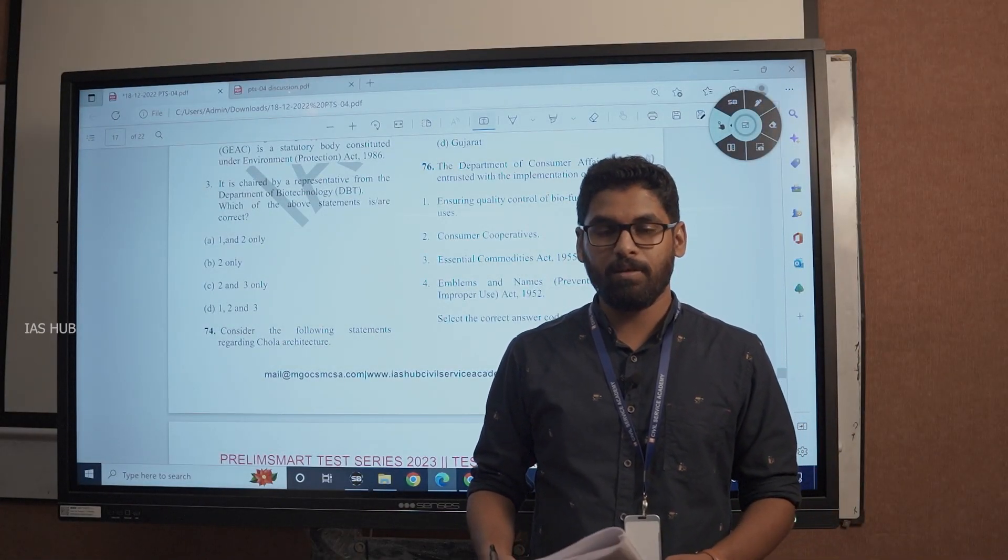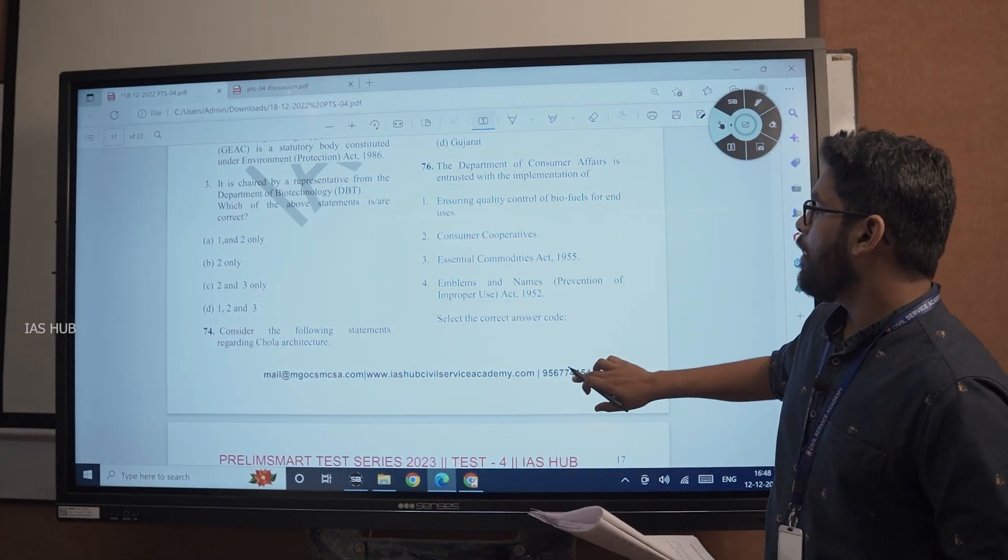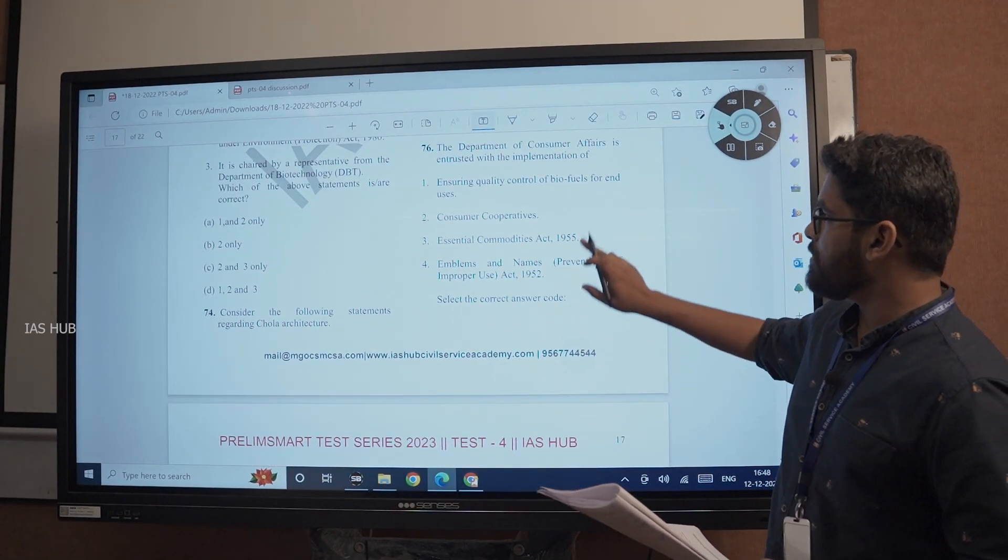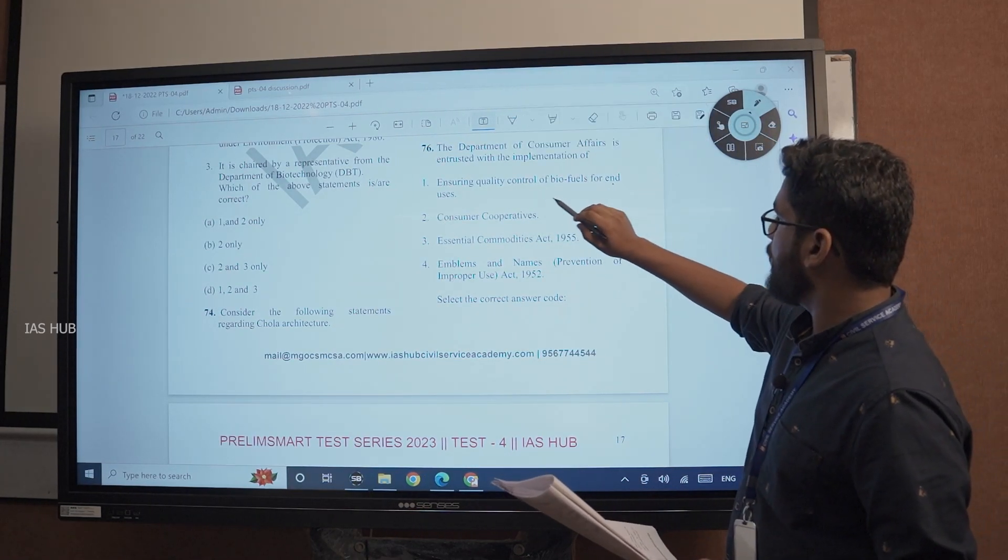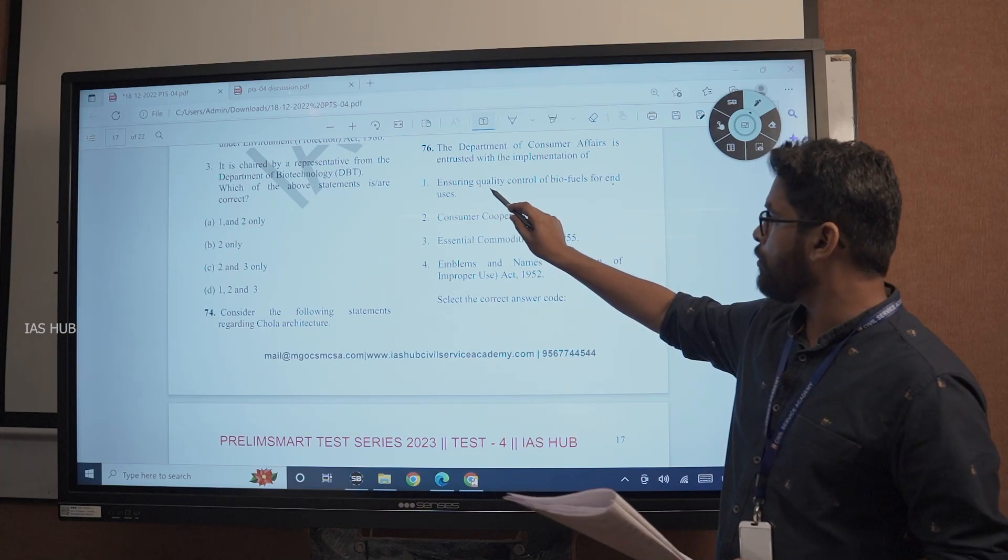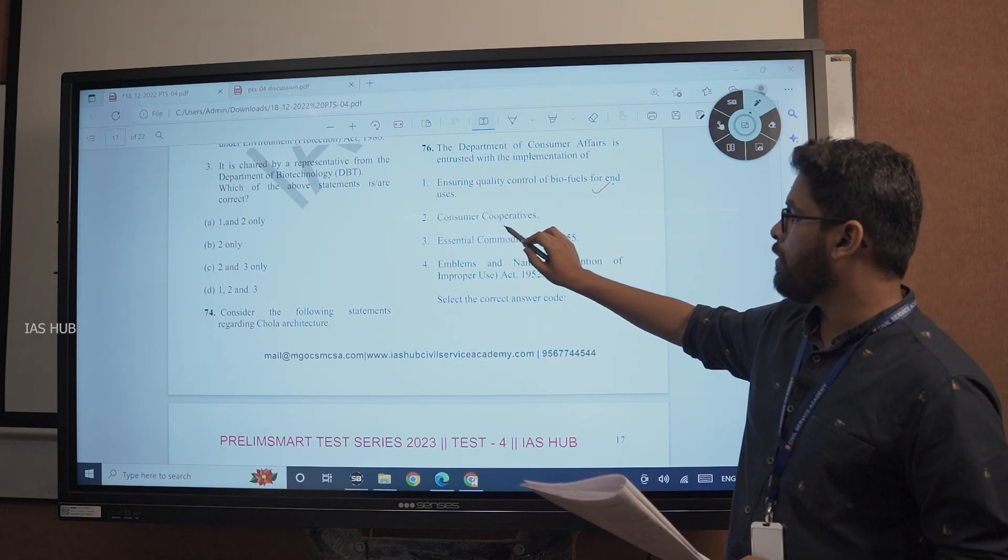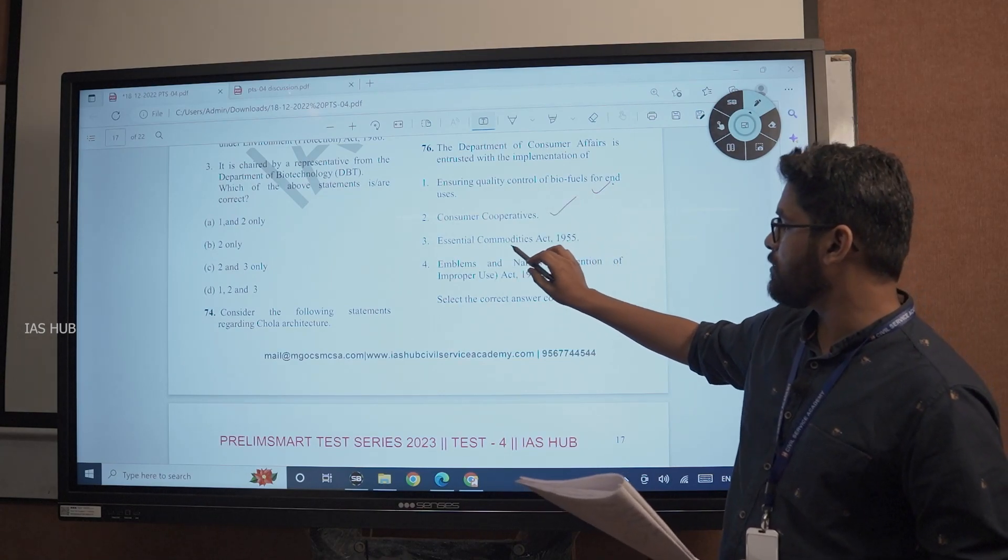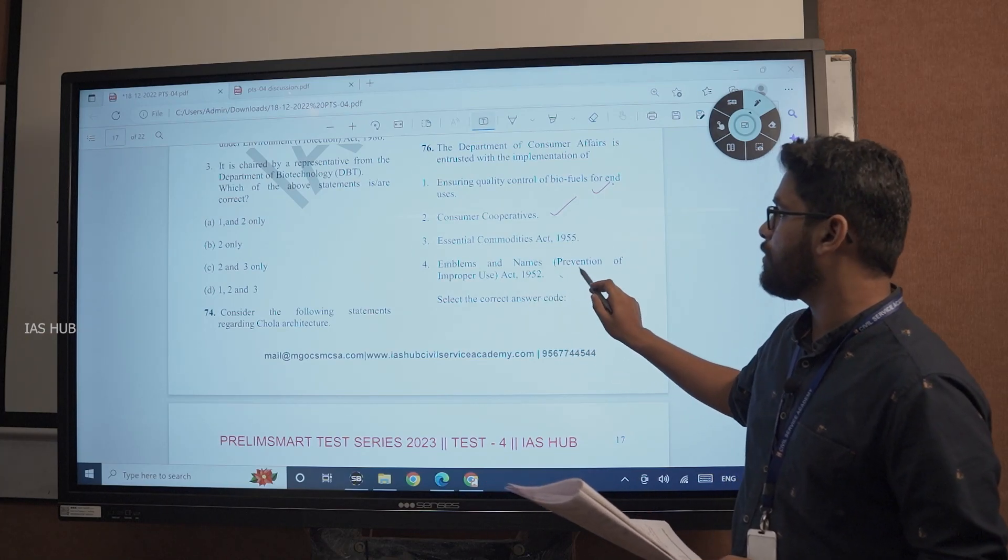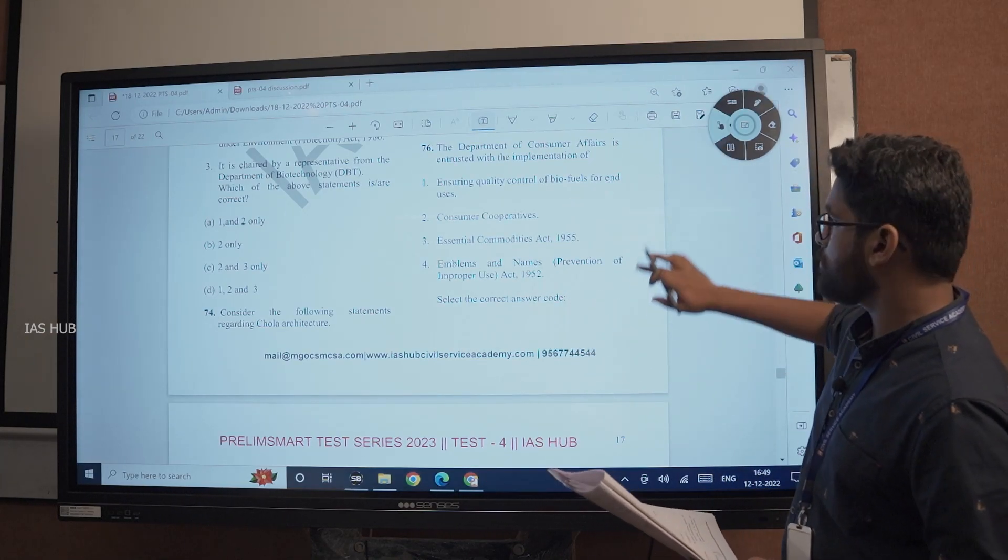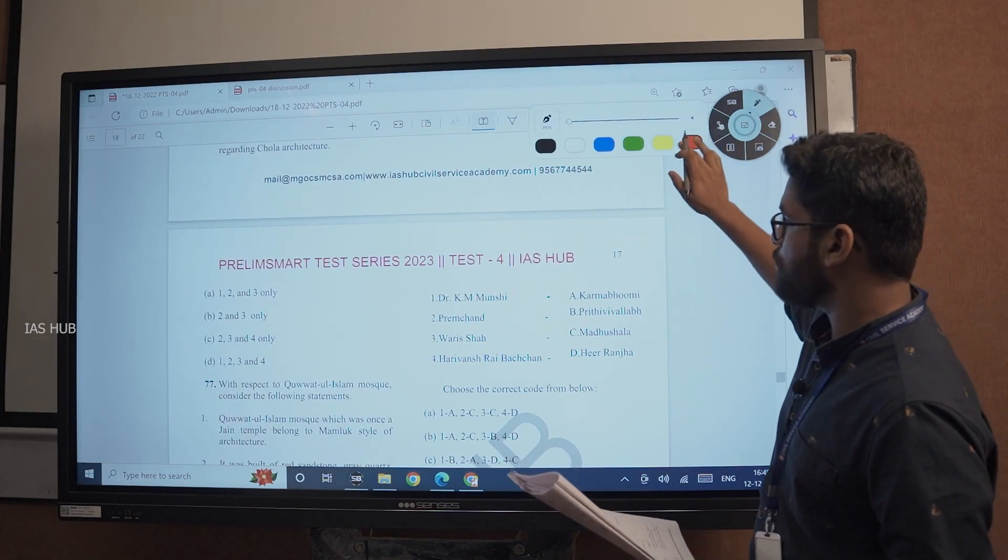Hi all, welcome to IASR. We will be looking to the rest of the questions of PTS04. The department of consumer affairs is interested with the implementation of ensuring quality control of biofuels for end-users, consumer cooperatives, essential commodities act 1955, emblems and names, prevention of improper use act 1952. All of the above is the answer for the question.